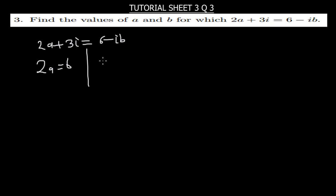You also get the complex, the imaginary part here, which is 3I. You equate it to the imaginary part, this side, negative IB.